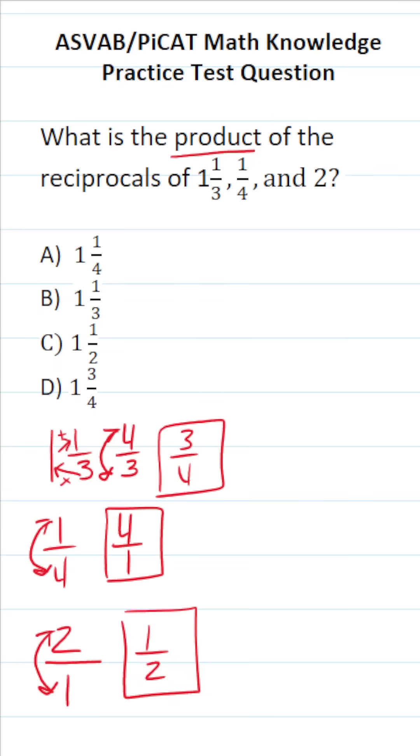What is the product of these reciprocals? That means you're just going to multiply them all together. So we have 3/4 times 4 over 1 times 1 over 2. When you multiply fractions, you just multiply straight across. So in our numerator, we have 3 times 4, which is 12, times 1, which is 12.